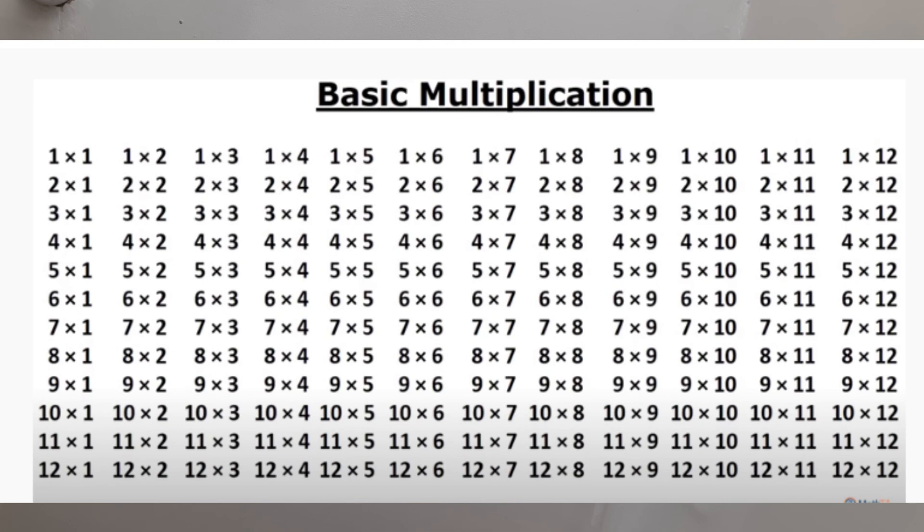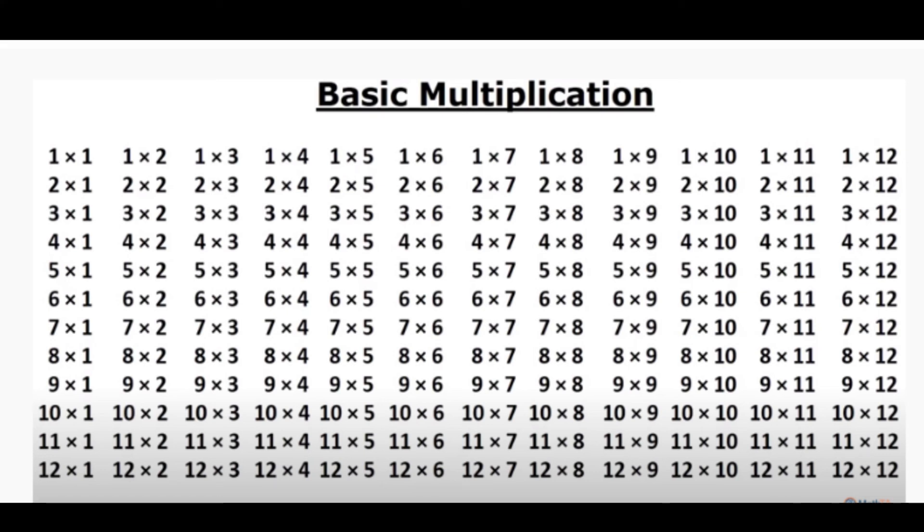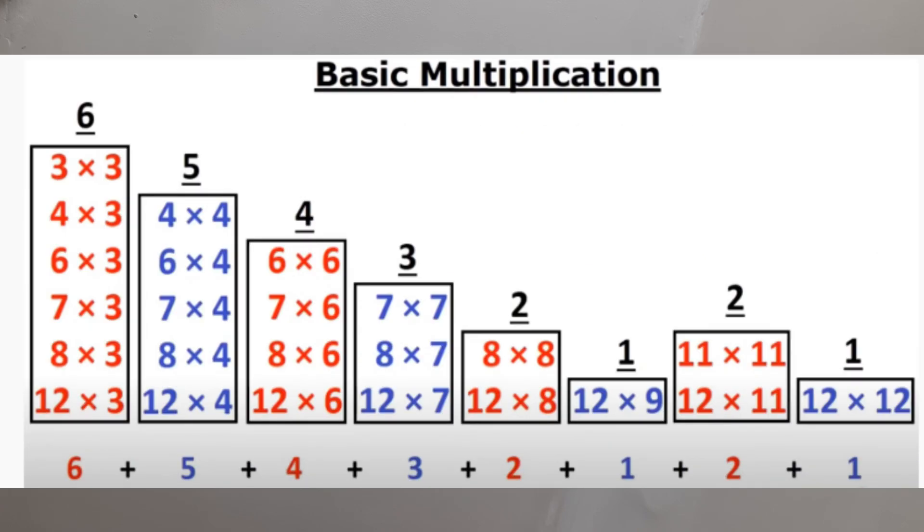After just learning 6 rules, you just learned 103 multiplication facts. 41 remain. Once you remove the duplicates, multiplying by 3, 4, 6, 7, 8 and 12, we only have 24 facts remaining. If you know 6 rules, you can go from 144 down to only 24. Now, we only have 24 remaining, in record time. Start practicing today.